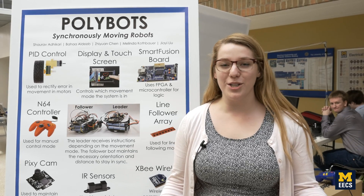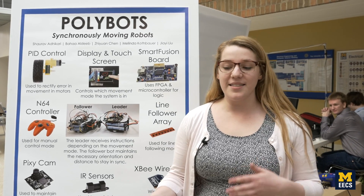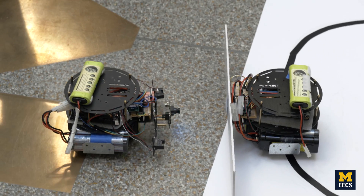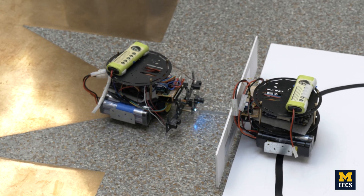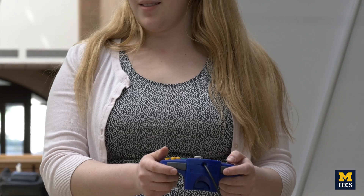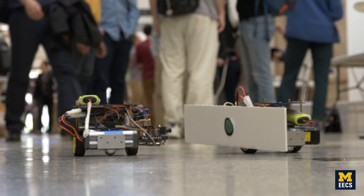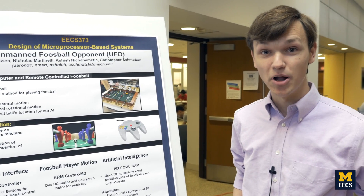We have a project that is two synchronously moving robots. The way that they synchronize is using a leader bot and a follower bot. You're controlling the leader bot either with a line-following array or an N64 controller. The follower bot maintains its orientation and direction using a camera that follows color and IR sensors to measure distance. The goal is to help carry objects in a warehouse-type setting.